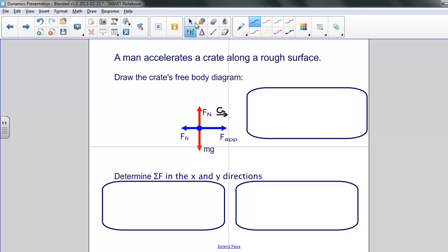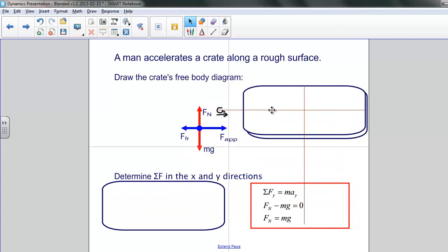So our next step is to determine the net force in the x and y directions. Let's start off with the y direction. In the y direction, the sum of our forces is just equal to the mass times acceleration in the y direction, in the vertical direction.